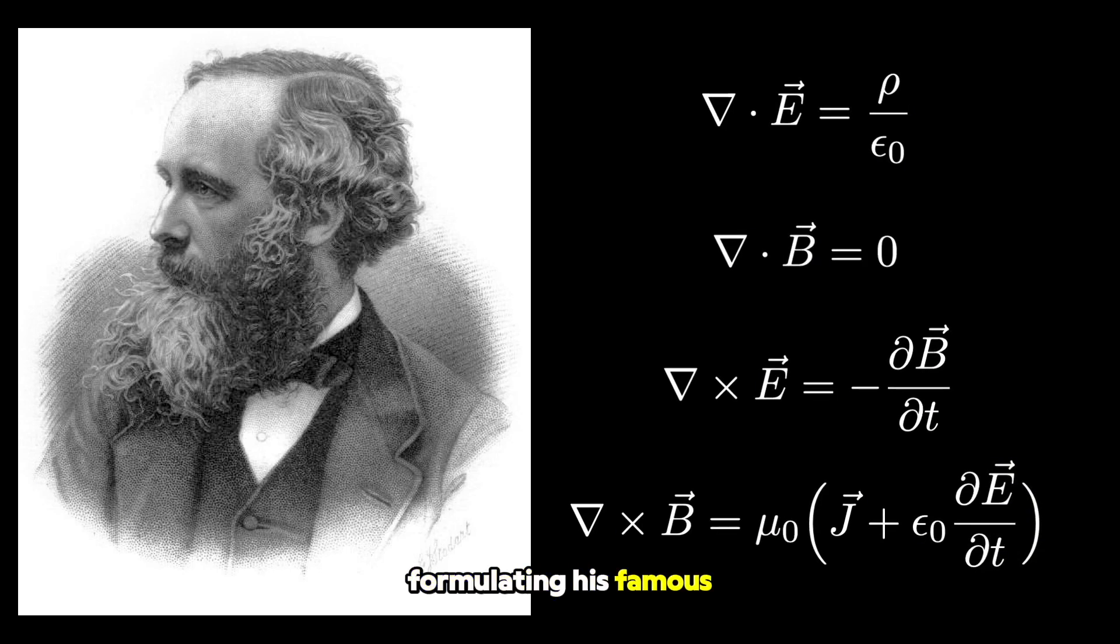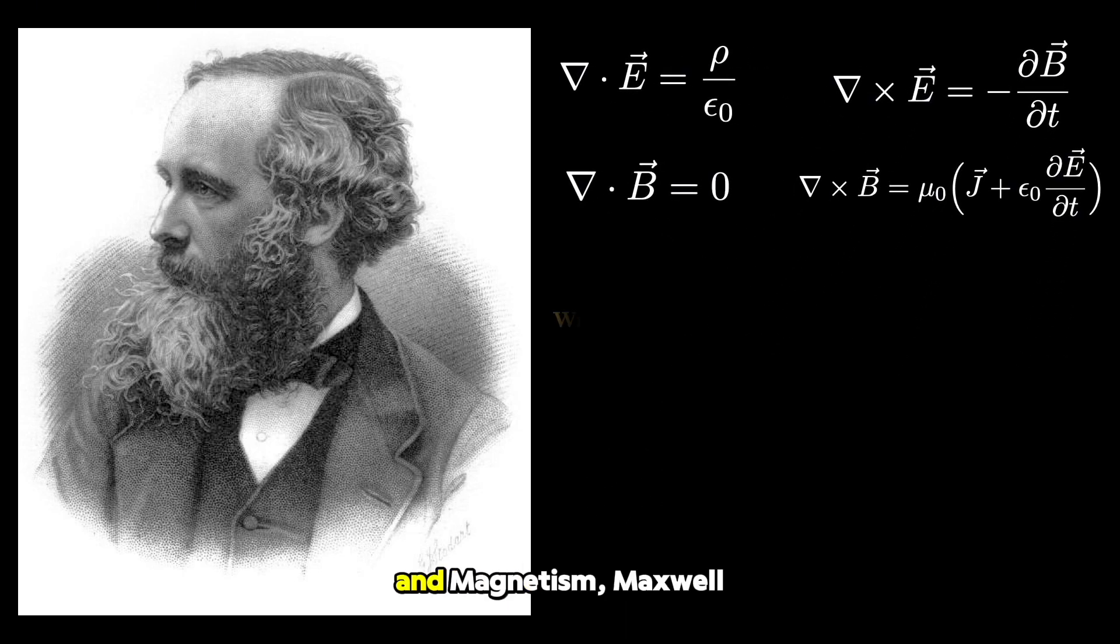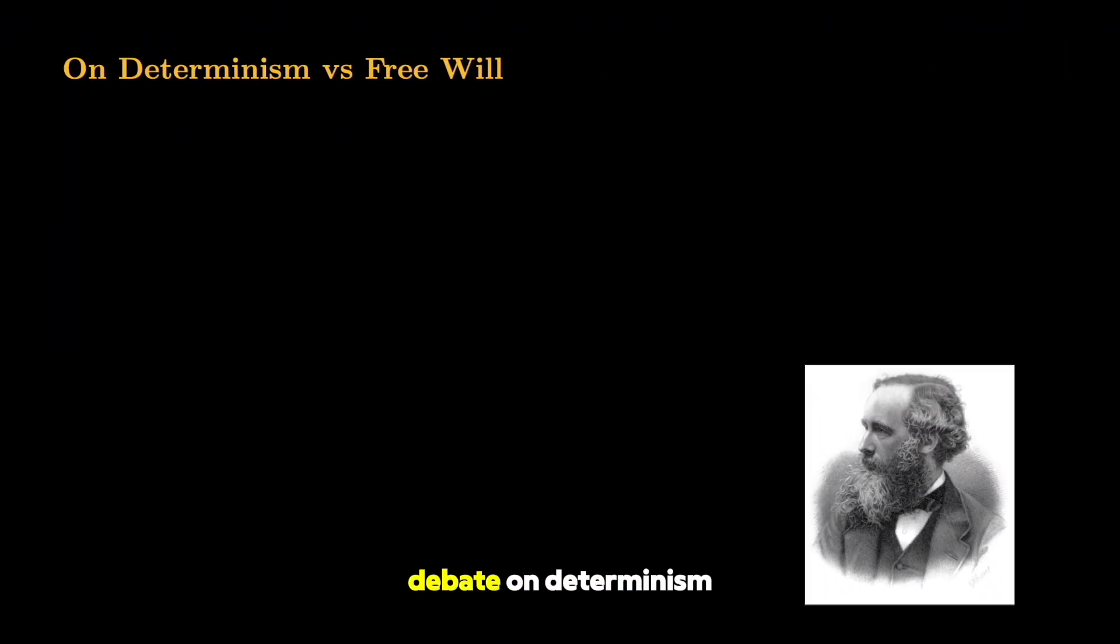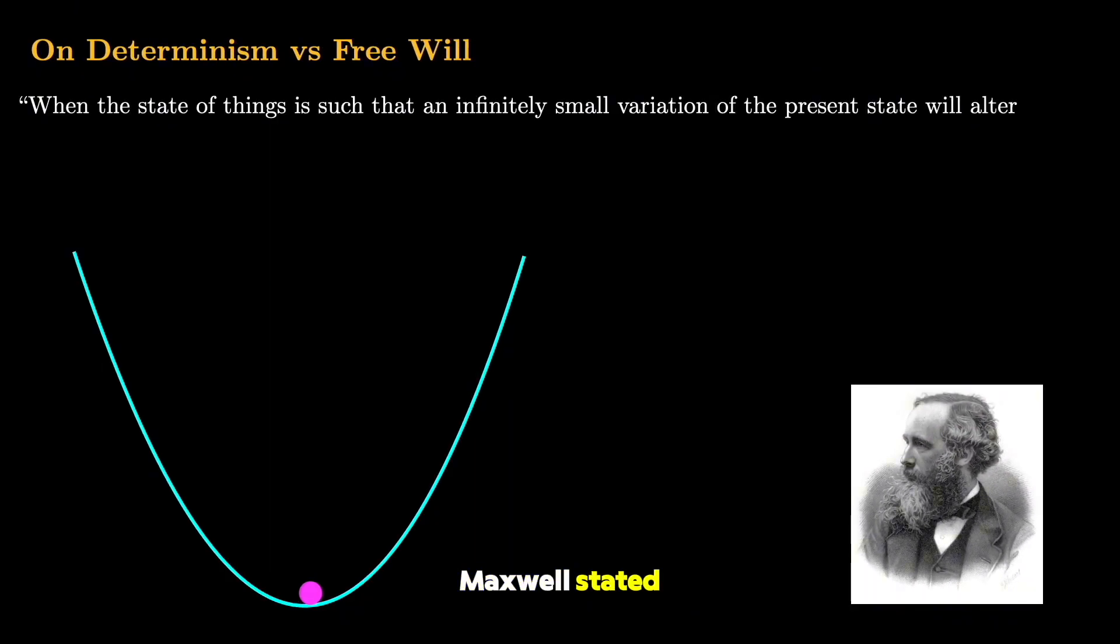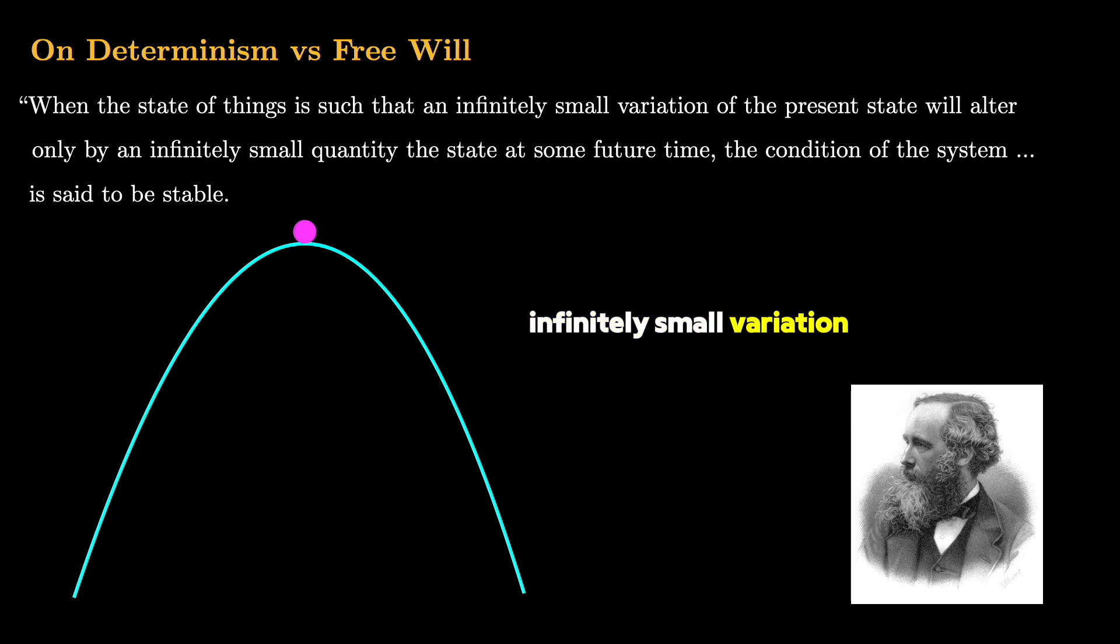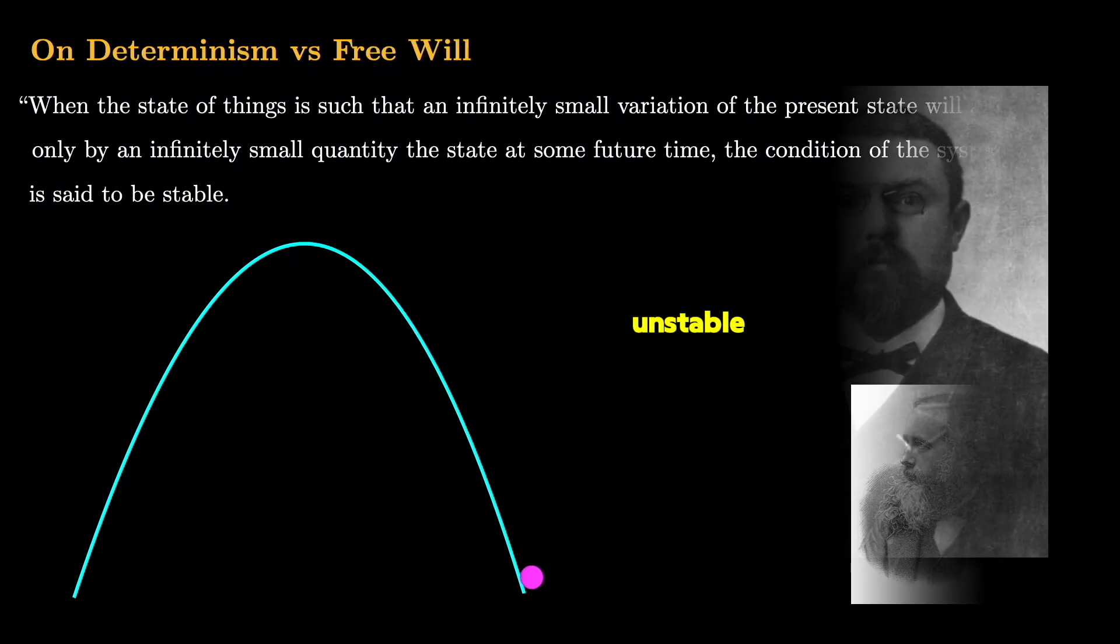In addition to formulating his famous equations that govern the behavior of electricity and magnetism, Maxwell also wrote many works on the relationship between science, math, and philosophy. In particular, during an essay debate on determinism versus free will, Maxwell stated, when the state of things is such that an infinitely small variation of the present state will alter only by an infinitely small quantity the state at some future time, the condition of the system is said to be stable. But when an infinitely small variation in the present state may bring about a finite difference in the state of the system in a finite time, the condition of the system is said to be unstable.